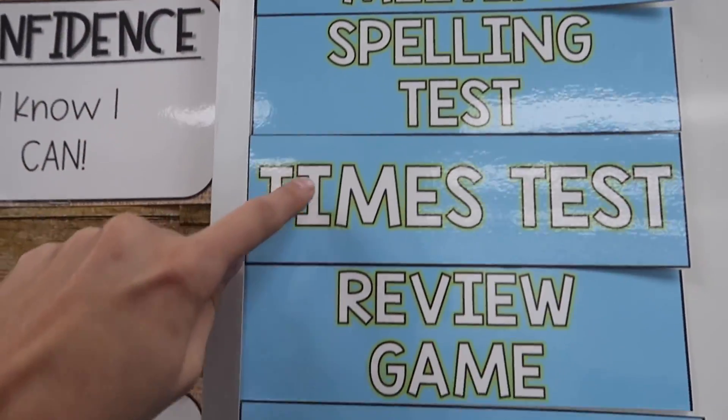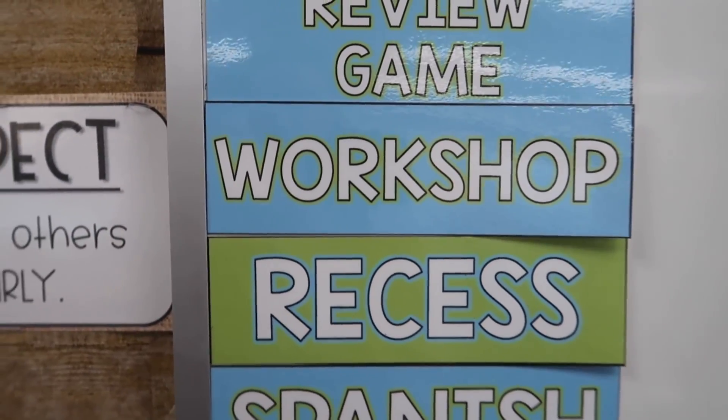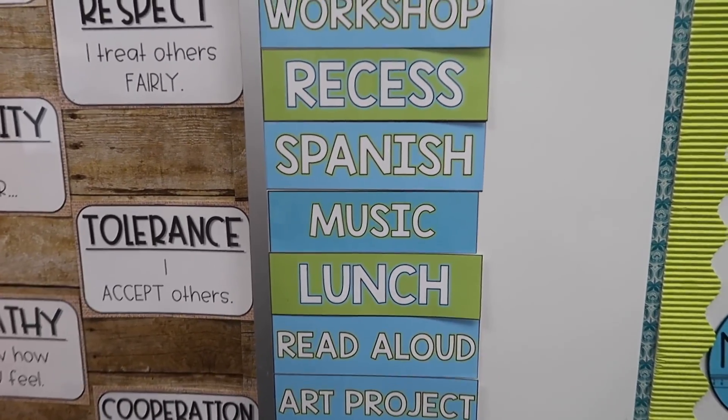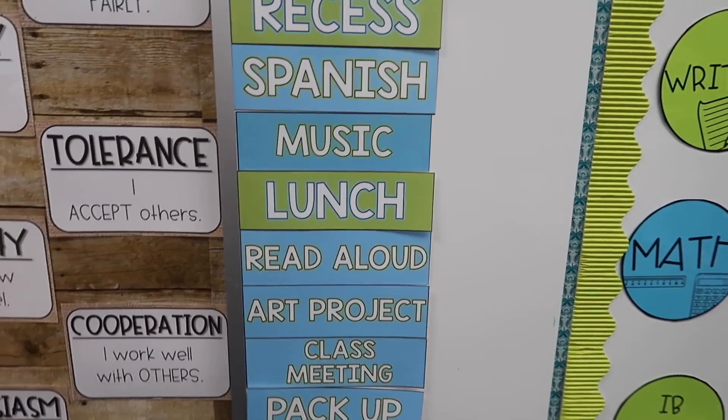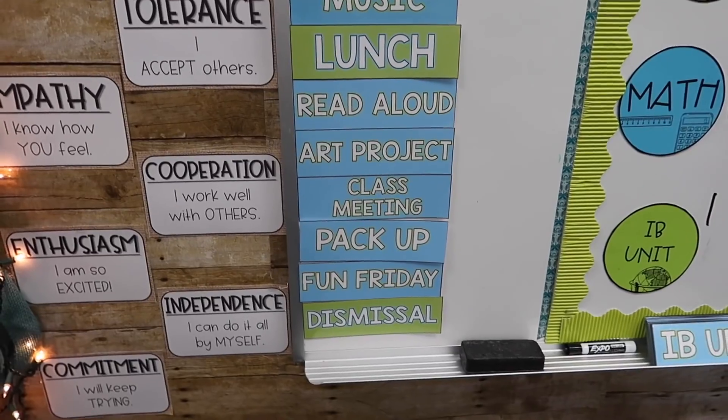Here's our schedule for tomorrow: morning meeting, spelling test, time test. We're doing our conjunction game tomorrow. There's a 15-minute block so kids can finish things they haven't finished. Then recess, Spanish, music, lunch — that's a lovely time in the day — read aloud. We're going to do a Christmas directed drawing, then class meeting, pack up, Fun Friday, and dismissal. Fun Friday is a built-in extra recess at the end of Fridays — about 20 minutes for kids who have completed all their work. If they haven't turned in a reading log, they don't get to join.